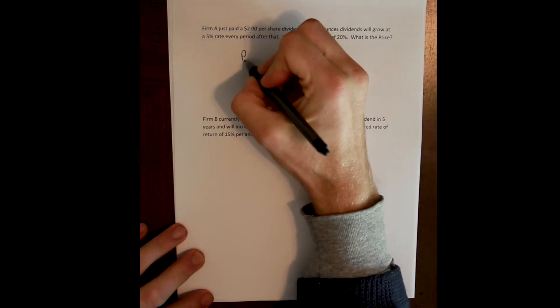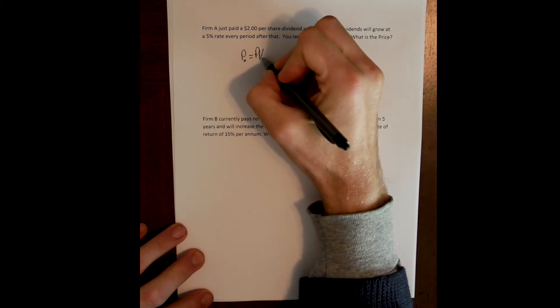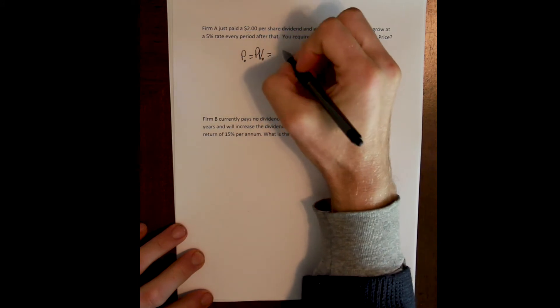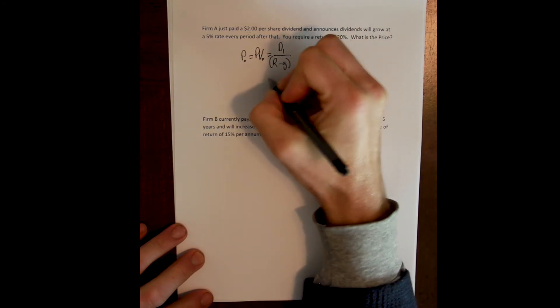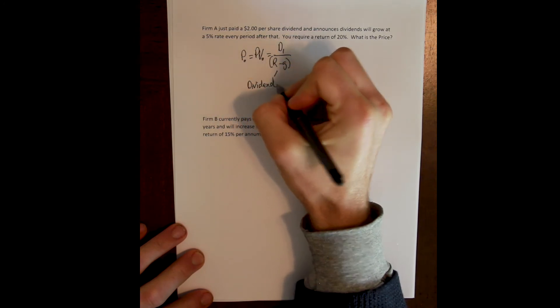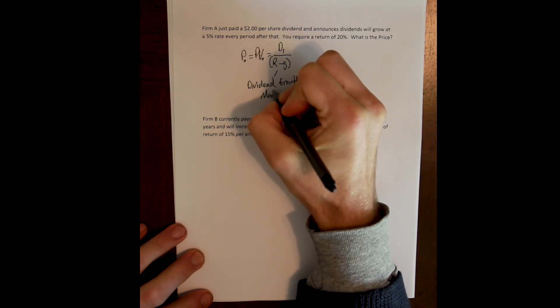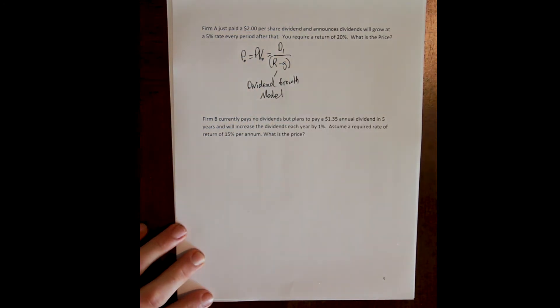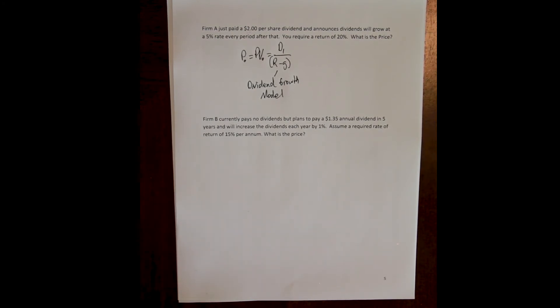We use the dividend growth model where the dividend growth model says that the price of any share of stock is equal to the next period's dividend divided by the discount rate minus the growth rate. The key for us in these problems is to identify the dividends that are given and the dividend that we need.